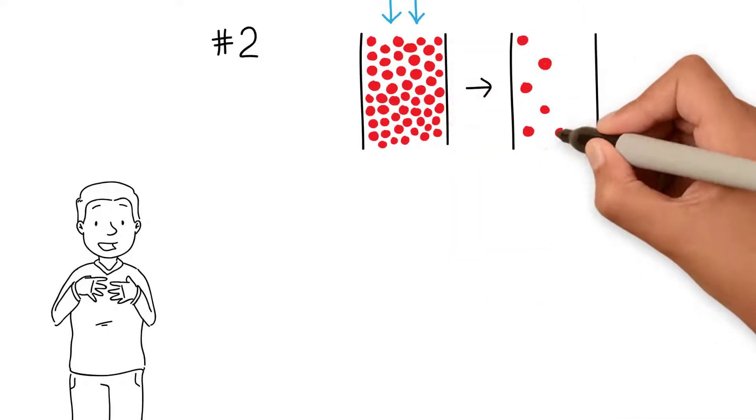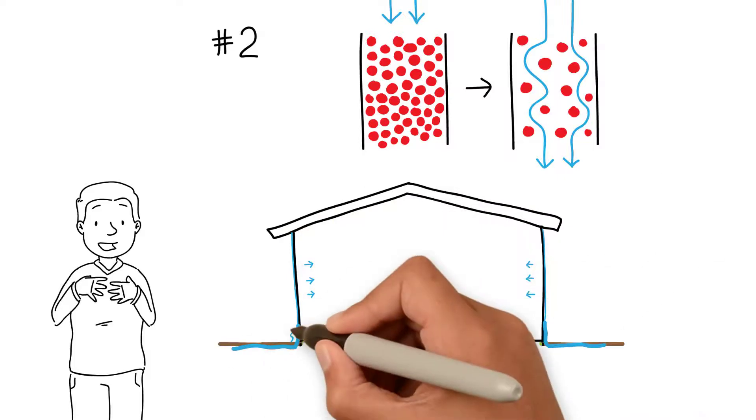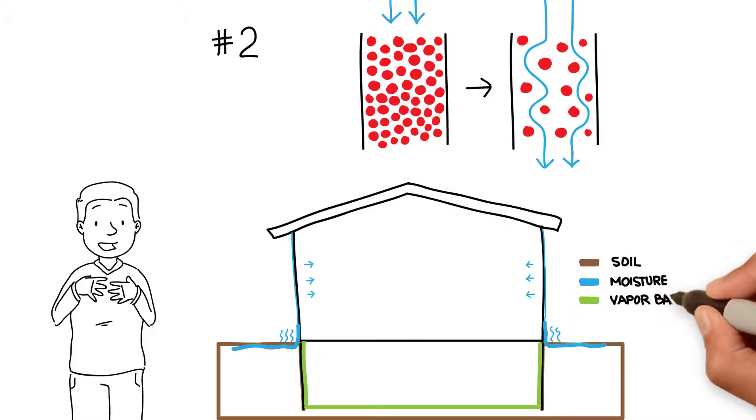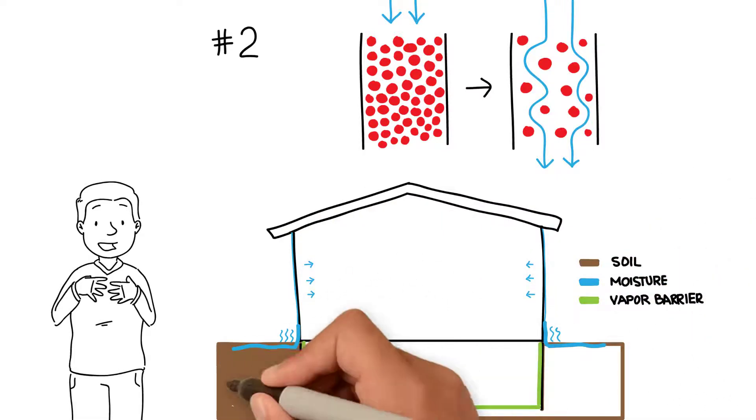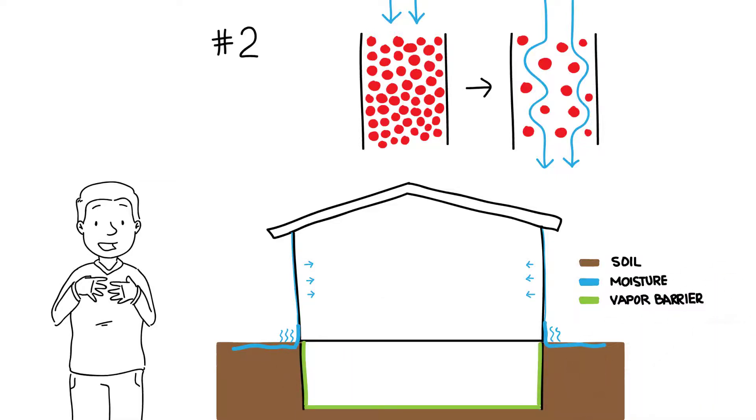An example of this is when the soil becomes saturated and moisture enters the crawl space through the walls by vapor diffusion. Installing a vapor barrier can help reduce the amount of moisture that makes its way into the crawl space and into the rest of the home.